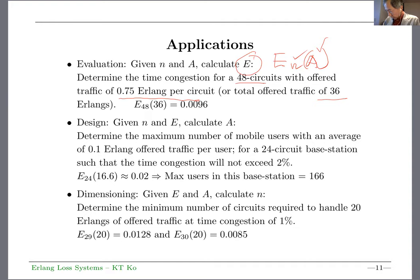The second one is you calculate A. You're given N and E. What's the biggest A you can have that will not exceed the performance of 2% time congestion given 24 circuits? It turns out to be about 16.6 Erlang. Given 0.1 Erlang per user for a mobile user, you can accommodate 166 users.